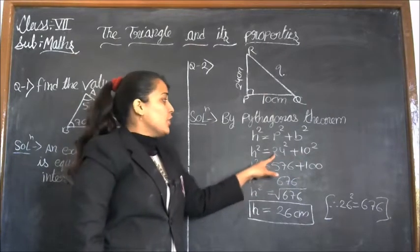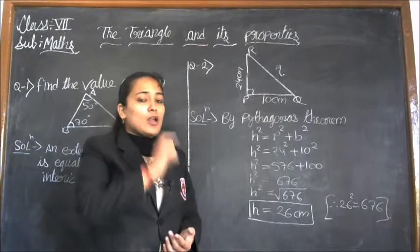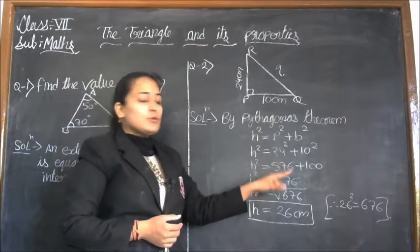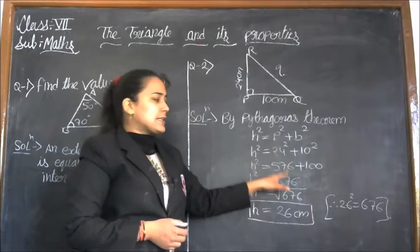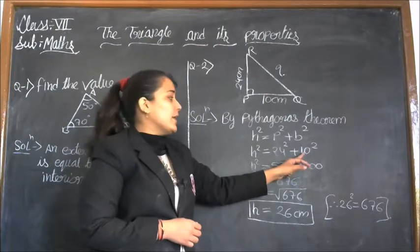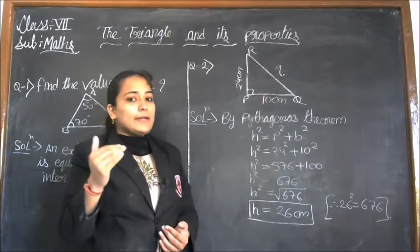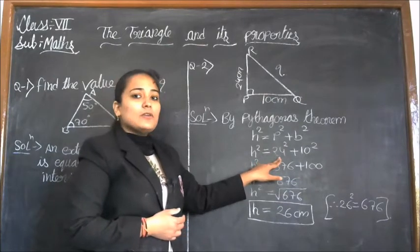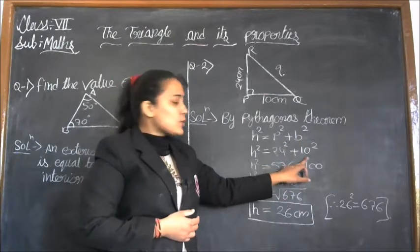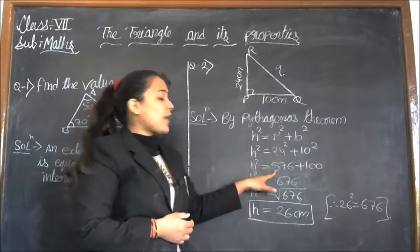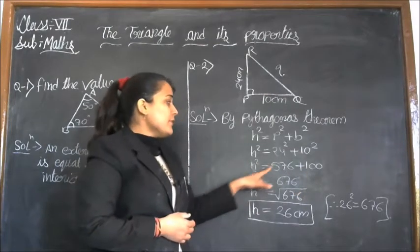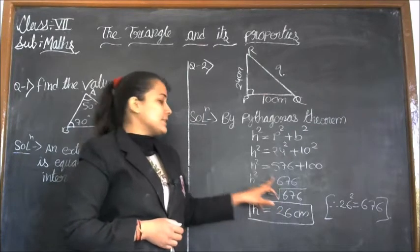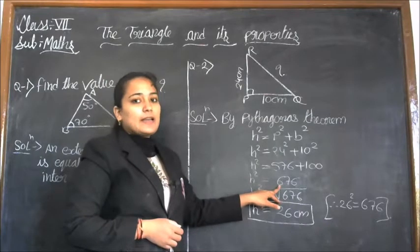H² = 24². What is 24 squared? 24 multiplied by 24 equals 576. What is 10 squared? 10 multiplied by 10 equals 100. So the answer of 24² is 576 and 10² is 100. Therefore H² = 576 + 100, and 576 plus 100 equals 676. So H² = 676.